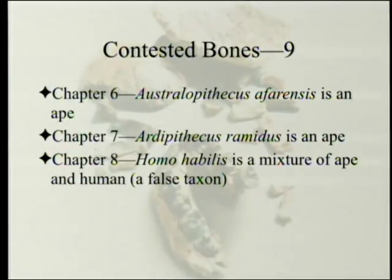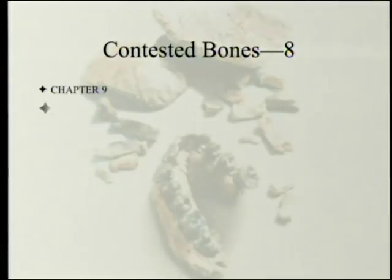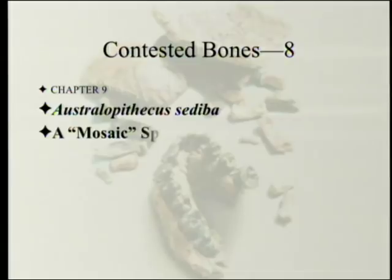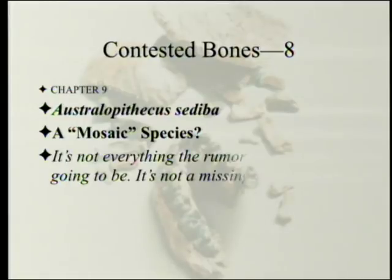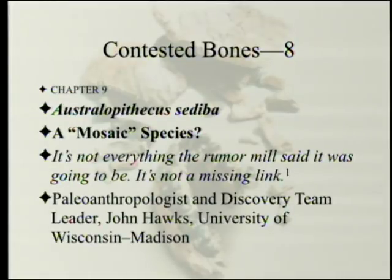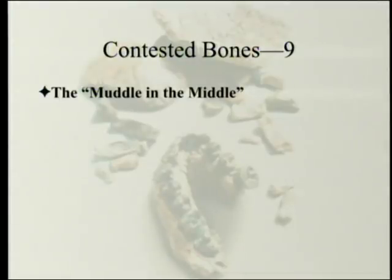Last week we discussed that Homo habilis is a mixture of ape and human — it isn't an actual species according to many authorities, not just according to Christopher Rupp and John Sanford. Today we're going to look at Australopithecus sediba. They raise the question: is this another mosaic species? The quote up front is: 'It's not everything the rumor mill said it was going to be. It's not a missing link.' That's going to be important when we sum up at the end.